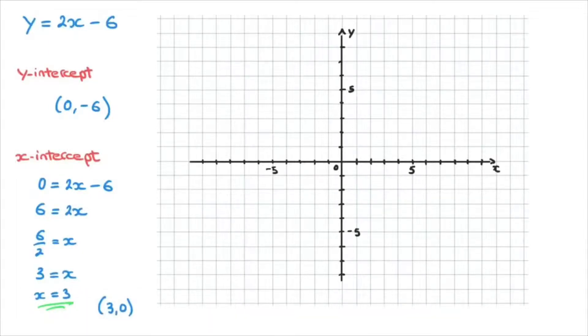Now that we have our grid ready, we can go ahead and plot the points. So I'll start with the y-intercept. That's the point with coordinates (0, -6). And the fact that x is 0 tells us that we're on the y-axis. And the y-value is negative 6. So starting from 0, we go 1, 2, 3, 4, 5, 6 downwards. And I'll just add that point.